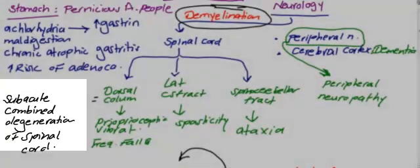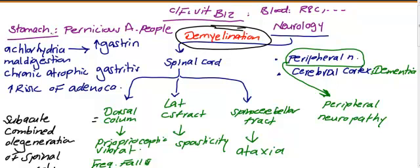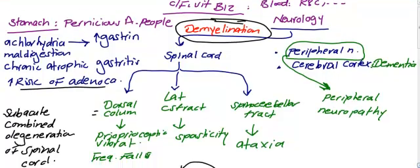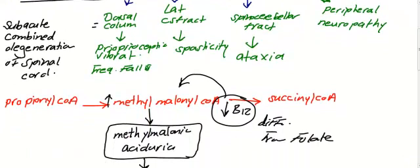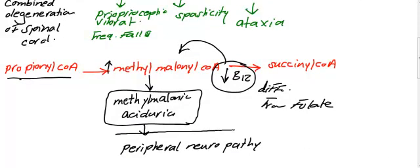In summary, vitamin B12 deficiency presents in patients with pernicious anemia — the main danger being increased risk of adenocarcinoma. Neurologically, three systems are affected via demyelination: the spinal cord (dorsal columns causing subacute combined degeneration, lateral corticospinal tract causing spasticity, spinocerebellar tract causing ataxia), the peripheral nerves (peripheral neuropathy due to methylmalonic aciduria from impaired propionyl CoA to succinyl CoA metabolism), and the cerebral cortex (dementia).